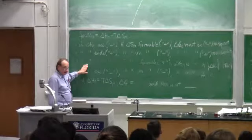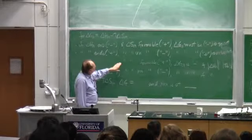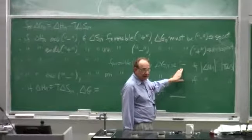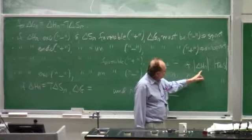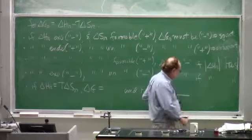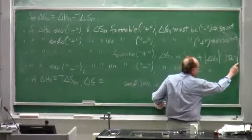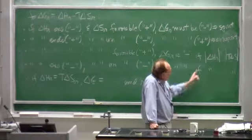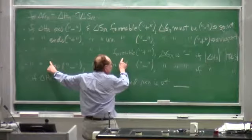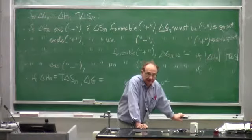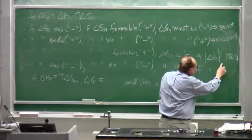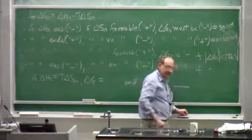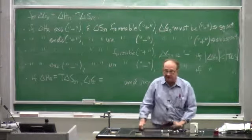If delta H is endothermic—bond disimprovement—but delta S is favorable, positive, then delta G can be negative and the reaction can be spontaneous, if the absolute magnitude of the T*delta S term is the bigger term. So what can you do to make this term bigger? You heat the system, by golly.